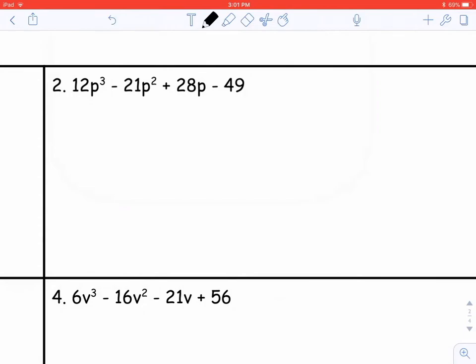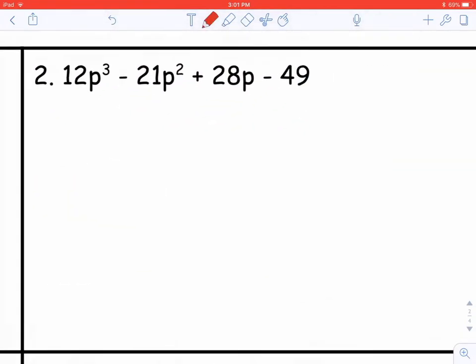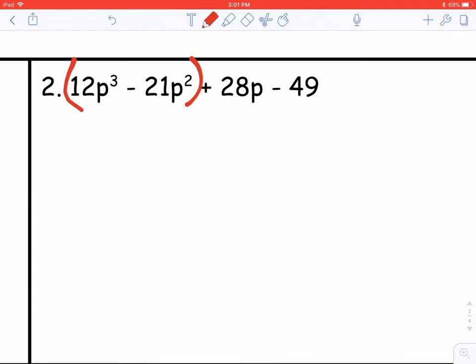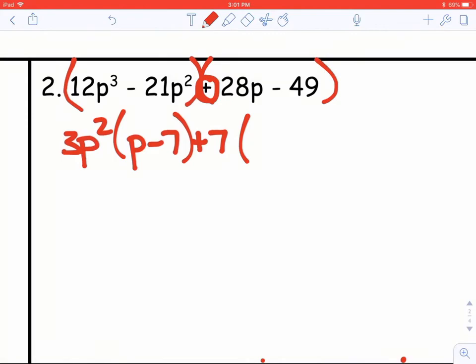All right, let's look at number two. So in this one we have four terms again. Let's group the first two and the last two. Take out the greatest common factor from each of those groups. So out of 12p cubed minus 21p squared, I can take out 3p squared. Then I would have p minus 7 left over. Out of the second group, take out the sign that's right there at the beginning and then they have 7 in common because 28 and 49 divide evenly by 7. Then I have 4p minus 7 left over.